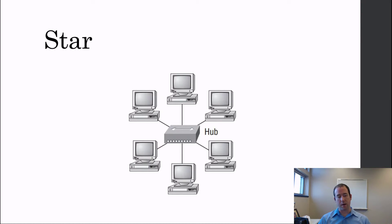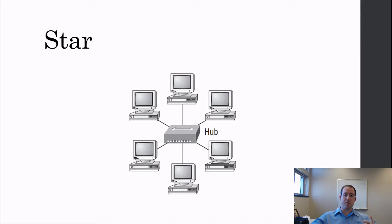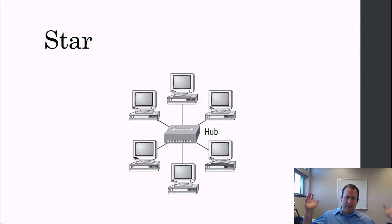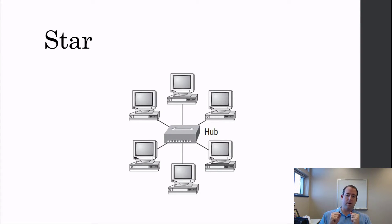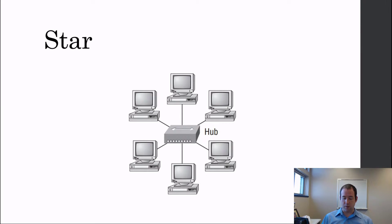A star topology — especially if we replace the hub in the middle with a switch — separates everything out. Every device can communicate with the central device. It's a single point of failure, but also a single point of troubleshooting. All communication travels through the hub.